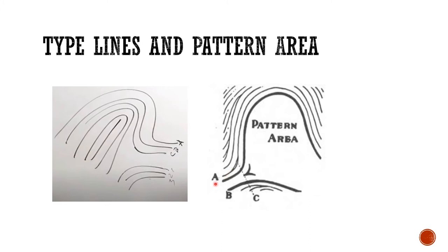The pattern area is the only part of the finger impression with which the fingerprint analyst is concerned with regard to interpretation and classification. The pattern area is present in all patterns; however, in many arches and tented arches it is impossible to define. This is not relevant because the only patterns where the pattern area needs to be defined for classification purposes are loops and whorls.